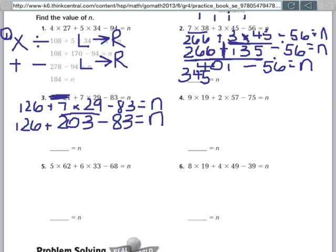So now when I look at this step of my problem, I don't see any more multiplication or division problems. So now I'm going to look for addition or subtraction going from left to right. So my first one going from left to right is 126 plus 203. 126 plus 203 gives me 329.